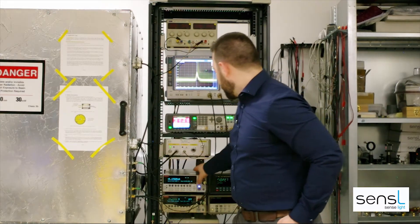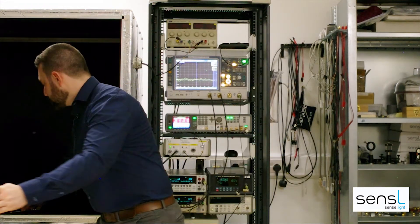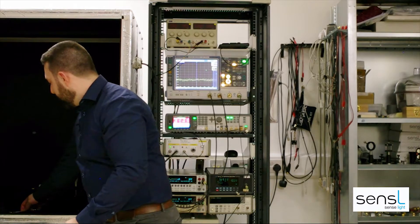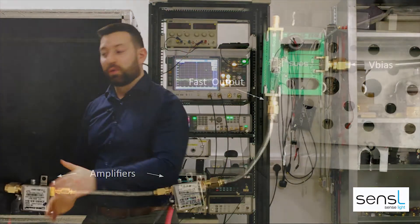To measure the dark pulses, I have connected the fast output of an SMA evaluation board to two mini circuits amplifiers in series and the mini circuits amplifiers are powered by 5 volts.